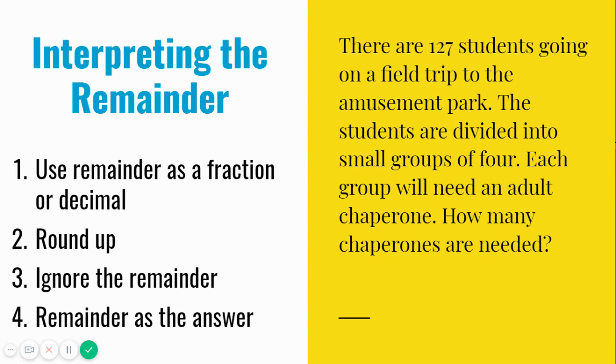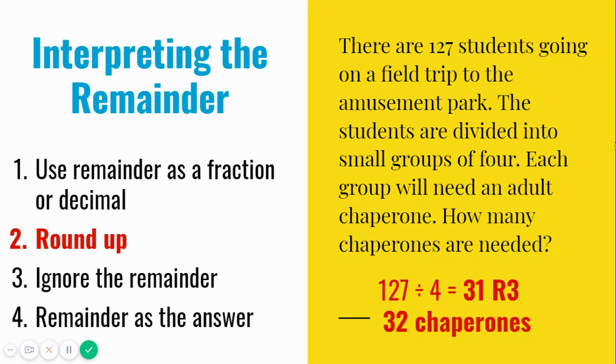Let's try another word problem. There are 127 students going on a field trip to the amusement park. The students are divided into small groups of 4. Each group will need an adult chaperone. How many chaperones are needed? If 127 are divided into groups of 4, we would have 31 groups with 3 students left over. We can't leave any students out, so we need another group with only 3 students in that last group. By interpreting the remainder as needing one more group to include those remaining students, we would round up to the next whole number. So in all, we will have 32 groups. The question asks, how many chaperones are needed? If we have 32 groups, then we will need 32 chaperones, so each group will have one chaperone. This is an example of when you would round up to the next whole number.